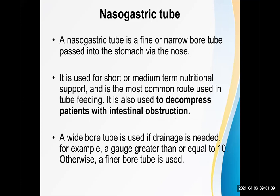A nasogastric (NG) tube is a fine or narrow-bore tube passed into the stomach via the nose. It is used for short or medium-term nutritional support — especially in pediatric patients — and is the most common route used in tube feeding. It is also used to decompress patients with intestinal obstruction, which is its main function in this case.